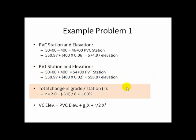As we said before, to come up with our value of R, we need to input percentages. So, 2.0% is G2. And G1 is a negative 6.0%. So, 2 minus a negative 6.0 gives us a total of 8. We'll divide that by the length of that curve in stations. An 800 foot curve is 8 stations long. So, 8 divided by 8 gives us 1.